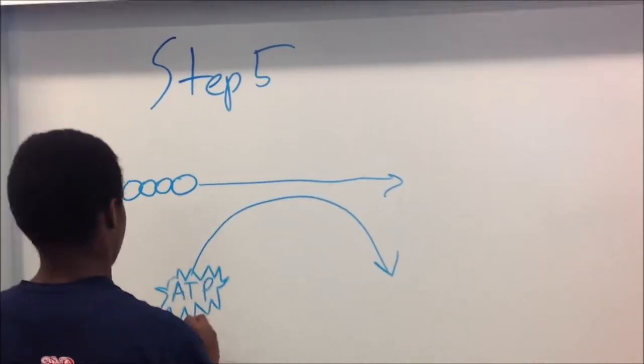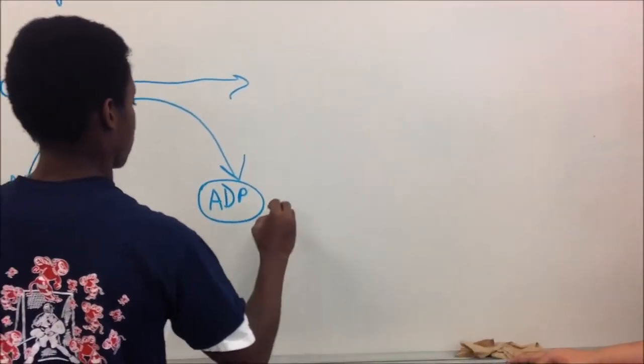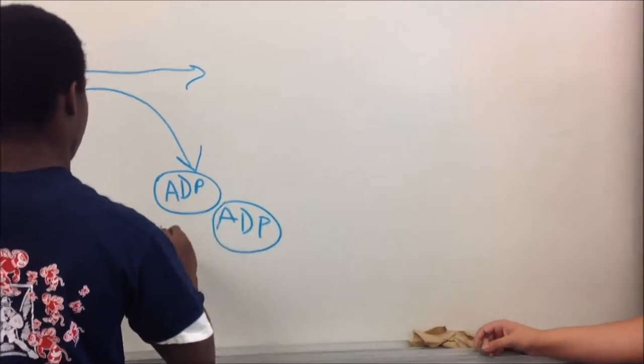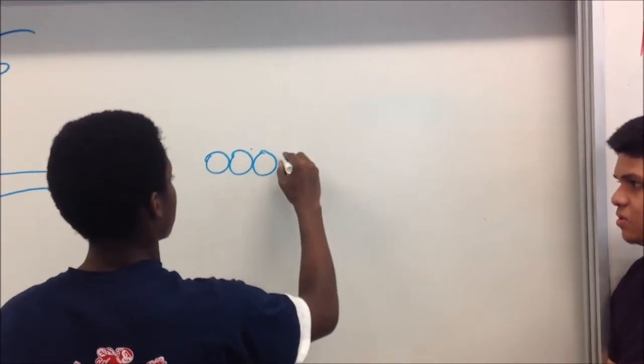The fusion of the two phosphate groups doesn't happen spontaneously. It needs the input of energy in the form of two ATP molecules. This also in the process creates two ADP molecules.